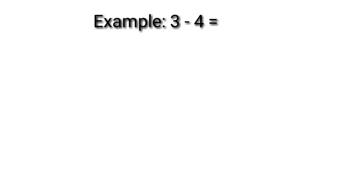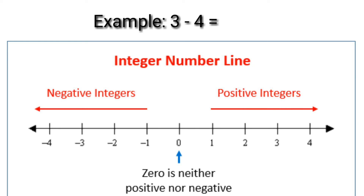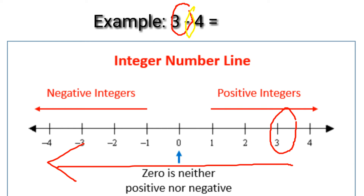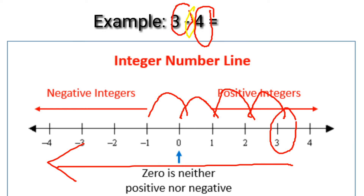Example: 3 minus 4 equals? Let us use the integer number line to subtract integers. Our starting point is positive 3. Since we have minus, we're going to move to the left — 4 movements to the left. We landed on negative 1. Therefore, 3 minus 4 equals negative 1.